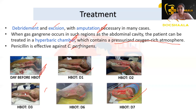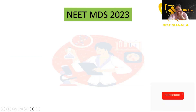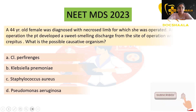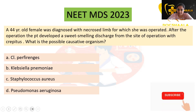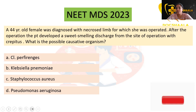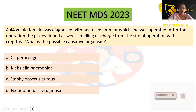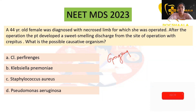The question asked in the NEET MDS exam: a 44-year-old female was diagnosed with a necrosed limb and was operated on. After the operation, the patient developed a sweet-smelling discharge from the site of operation with crepitus. Sweet-smelling discharge, necrosed limb, and crepitus as a sign — this shows the patient is suffering from gas gangrene. Gas gangrene is caused by Clostridium perfringens, which is the answer to this question.